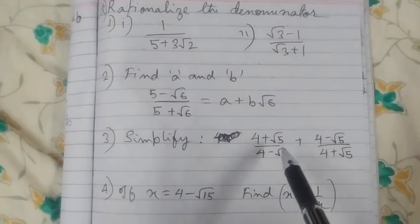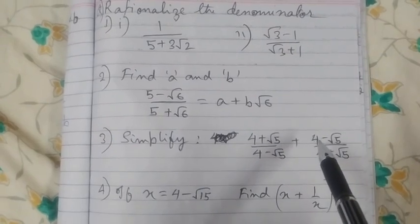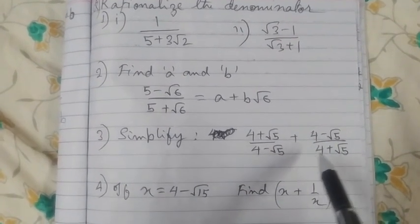Simplify: 4 plus root 5 by 4 minus root 5 plus 4 minus root 5 by 4 plus root 5.